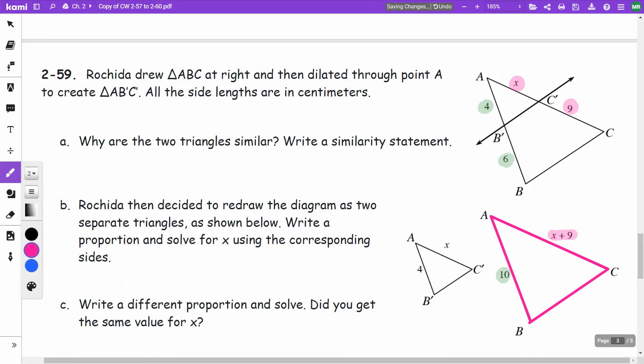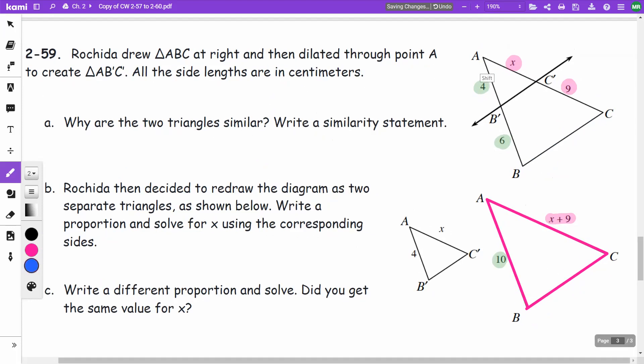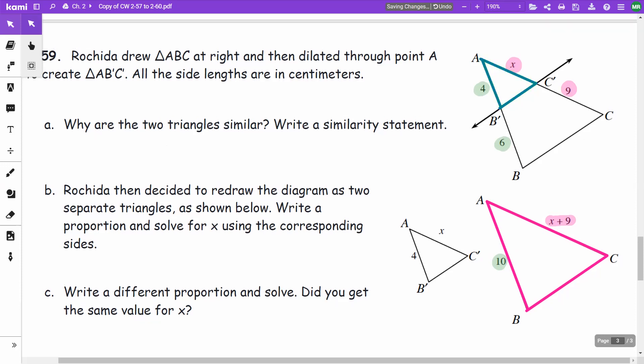Then we have this smaller triangle, which has 4 as a side, we don't know, and X. And so that triangle is this one here.